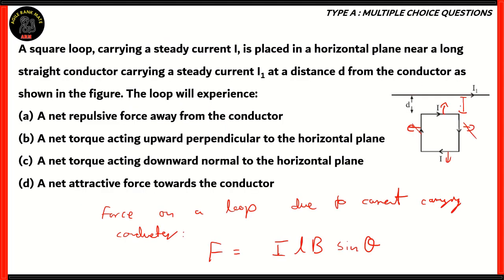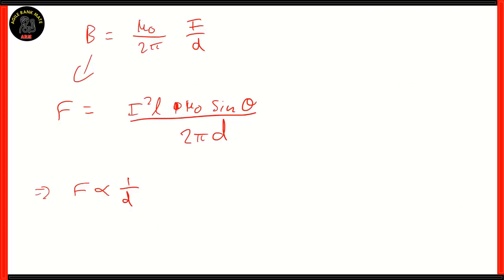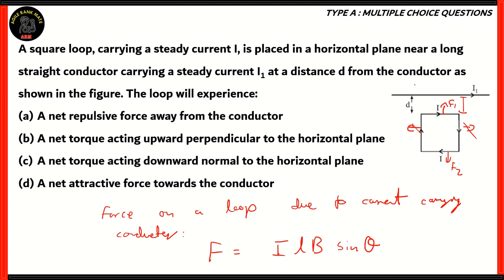Therefore, if we take this as F1 and take this as F2, F1 is closer to the current carrying conductor, so that force is going to be higher than F2, which is farther away. F1 is greater than F2 because D1 is less than D2. If F1 is greater than F2, then that means F1 is the attractive force because it's pushing the loop towards the conductor. Therefore, option D, net attractive force towards the conductor, is the right answer.